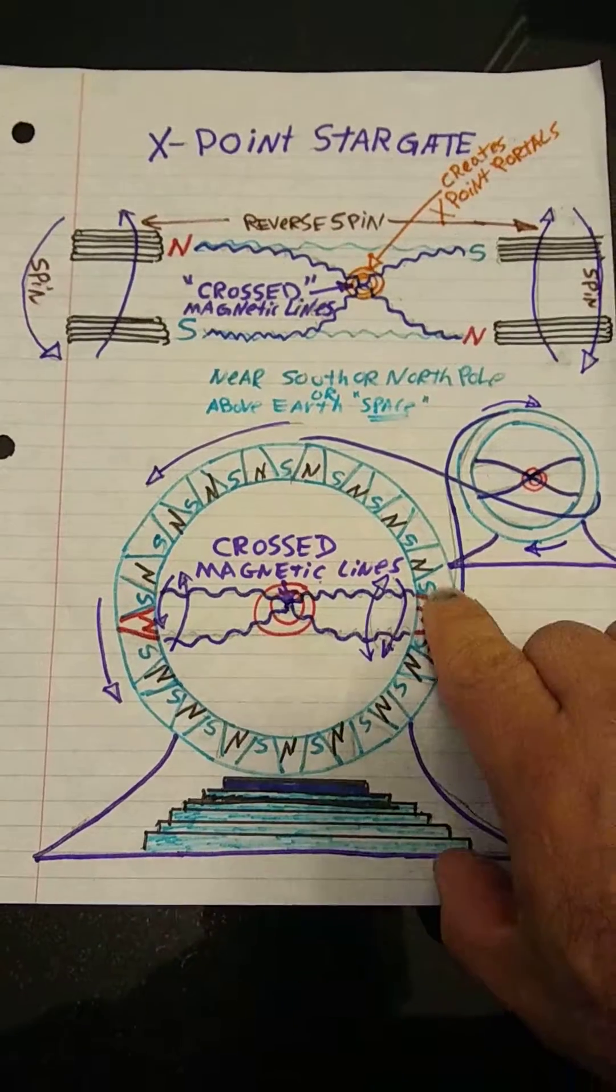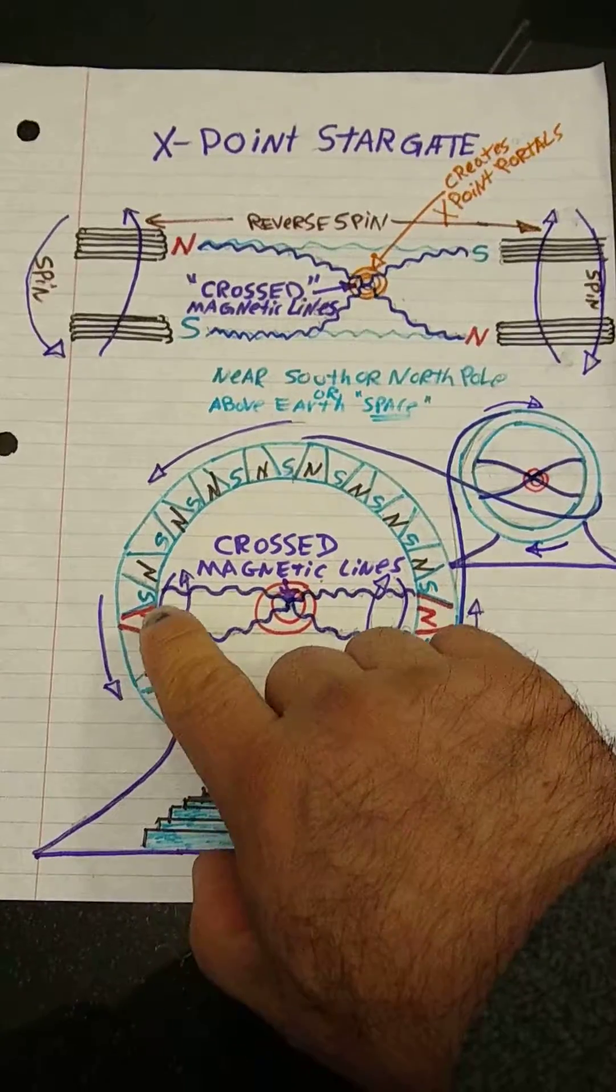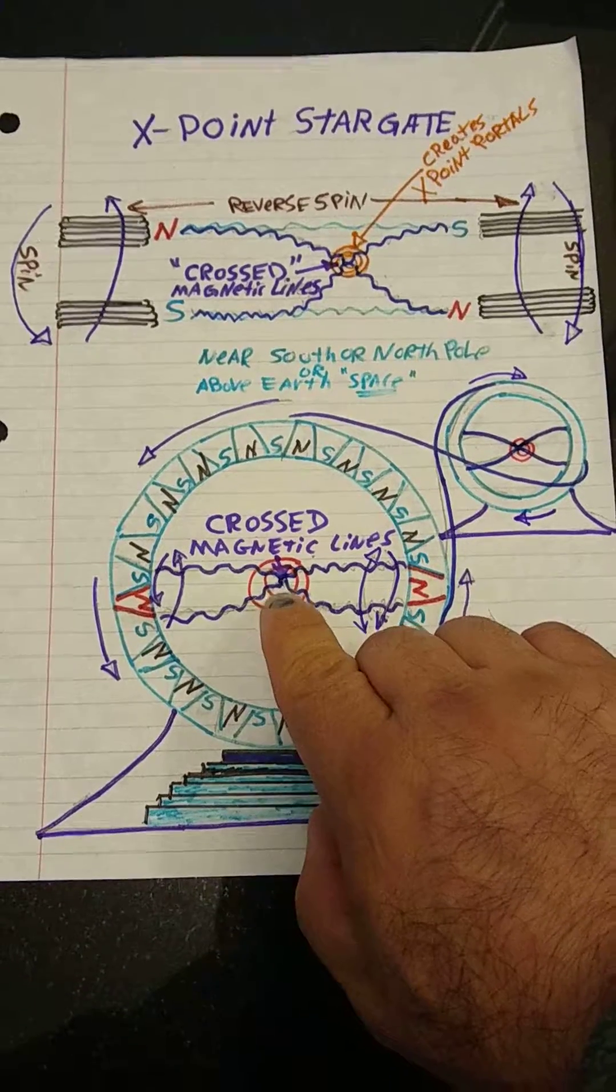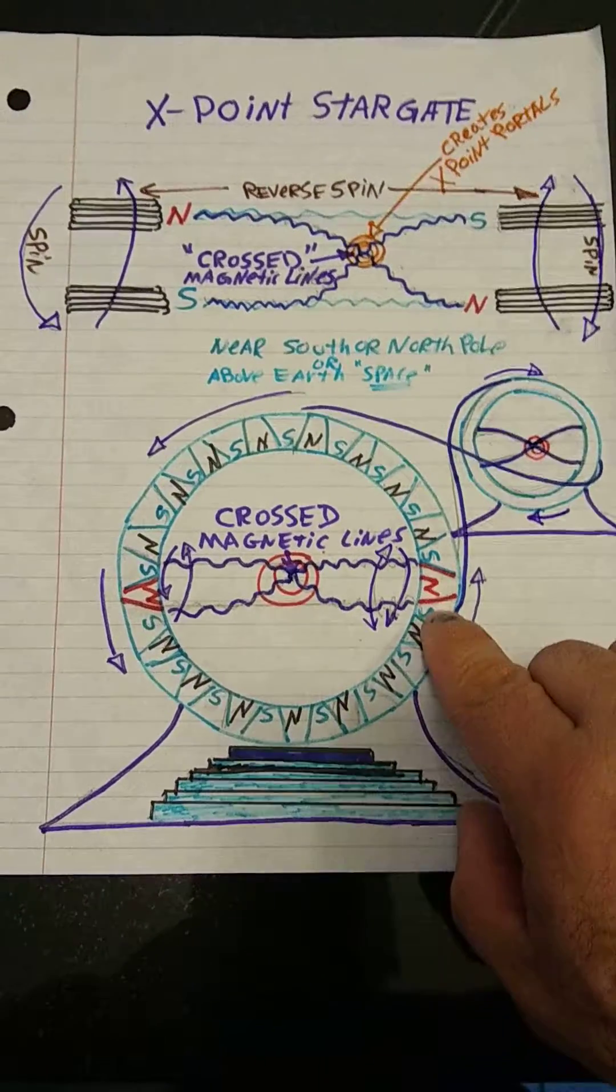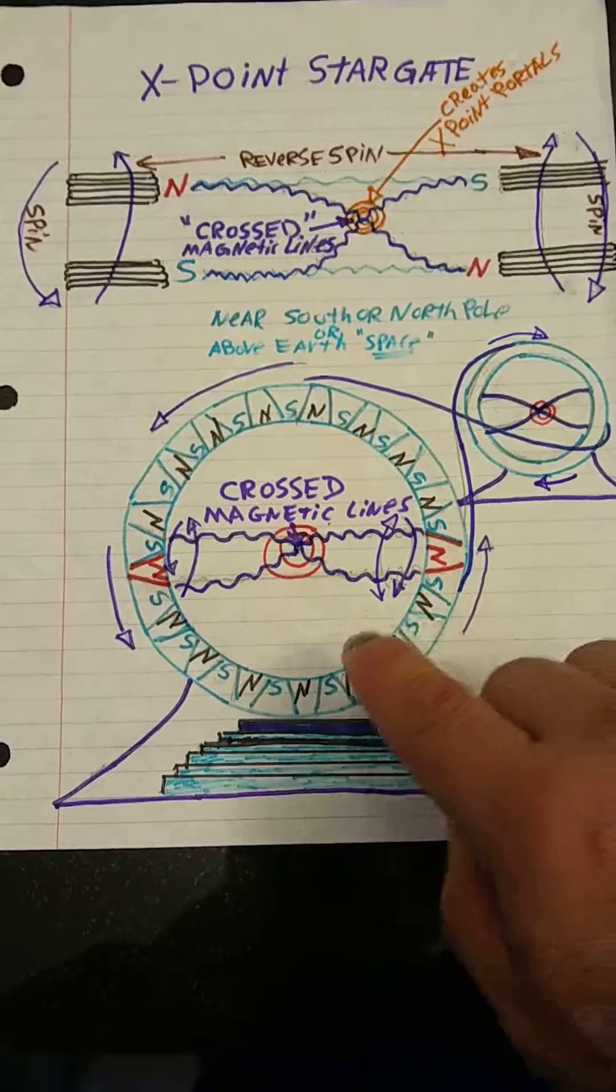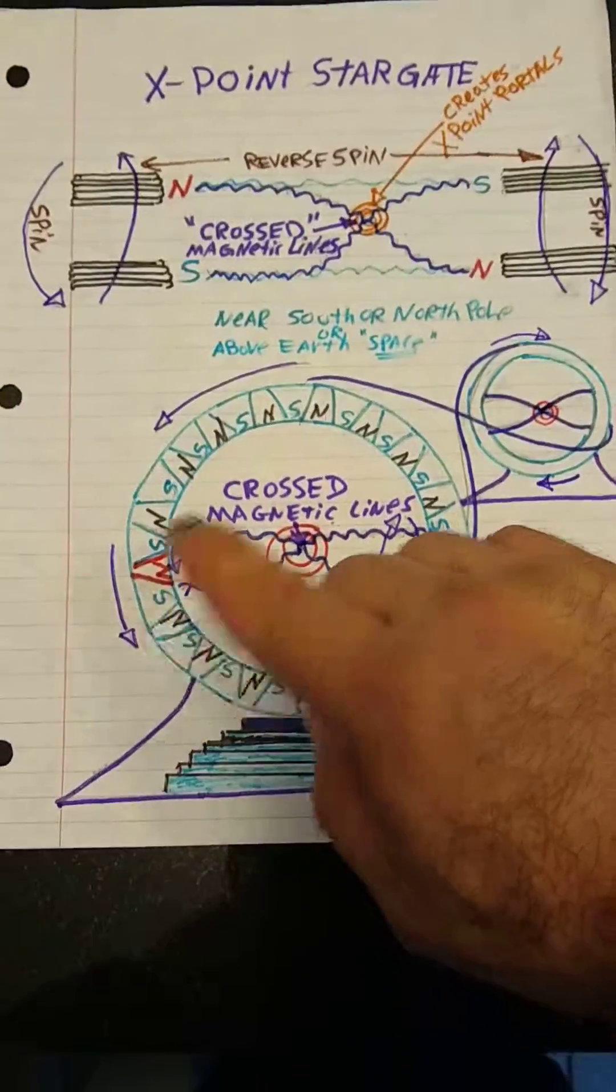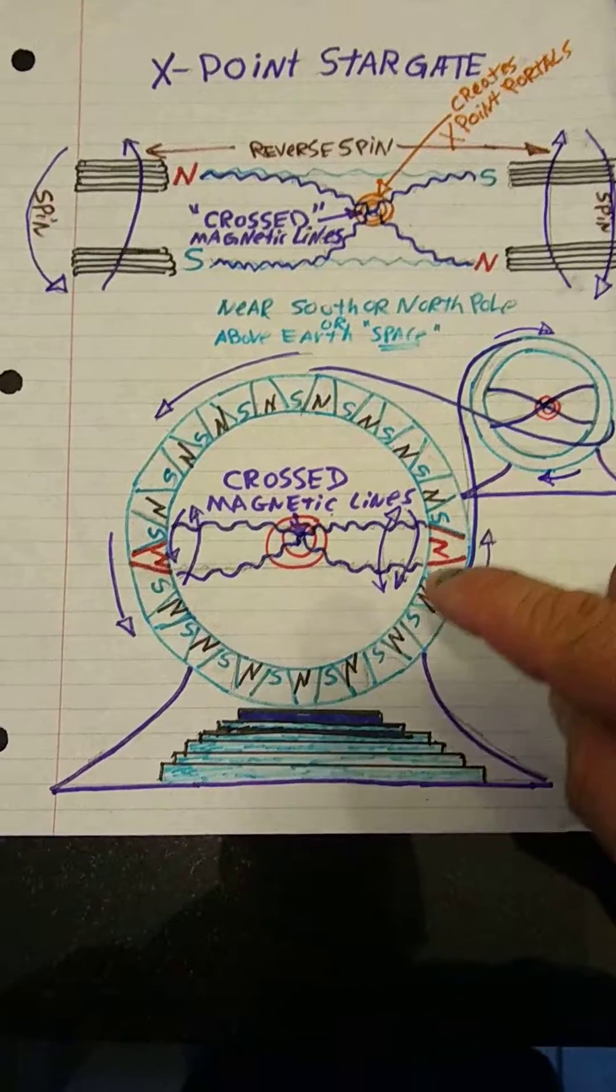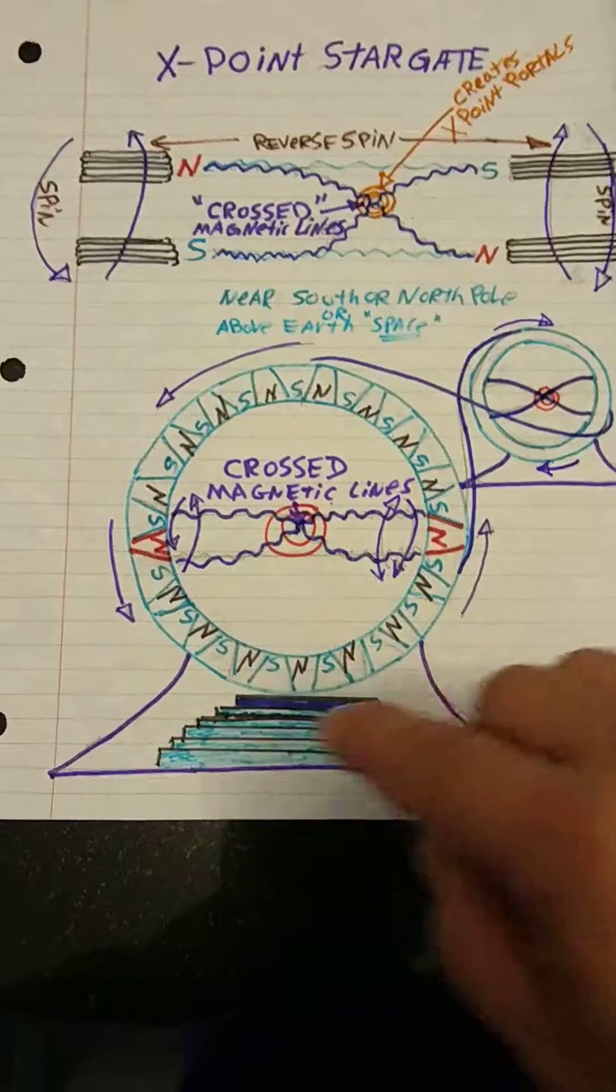So here's the same concept but on to the side. This is north and south, north and south, and as these spin they open, in theory, a portal. But you got sets of two: south north, south north, all the way around. So as they spin in opposite directions, the magnetic lines cross, and then all these in sequence will be crossing right in the center.